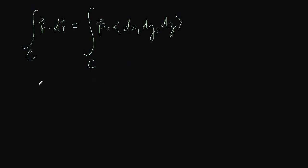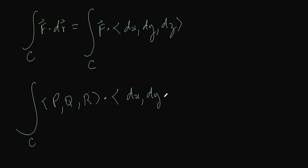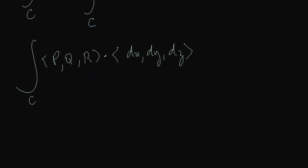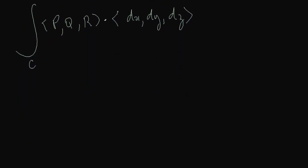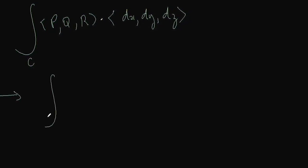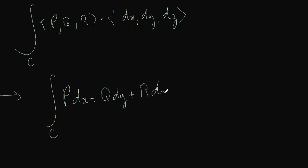Now if we rewrite F in component form, then we have that F equals (P, Q, R) dotted with (dx, dy, dz). And if you remember how to take the dot product, this simply means the integral of P dx plus Q dy plus R dz.